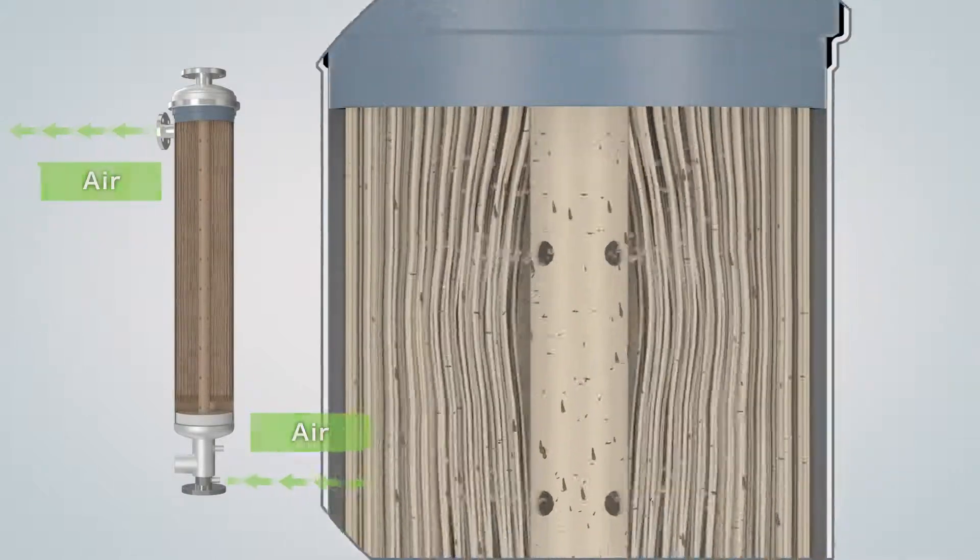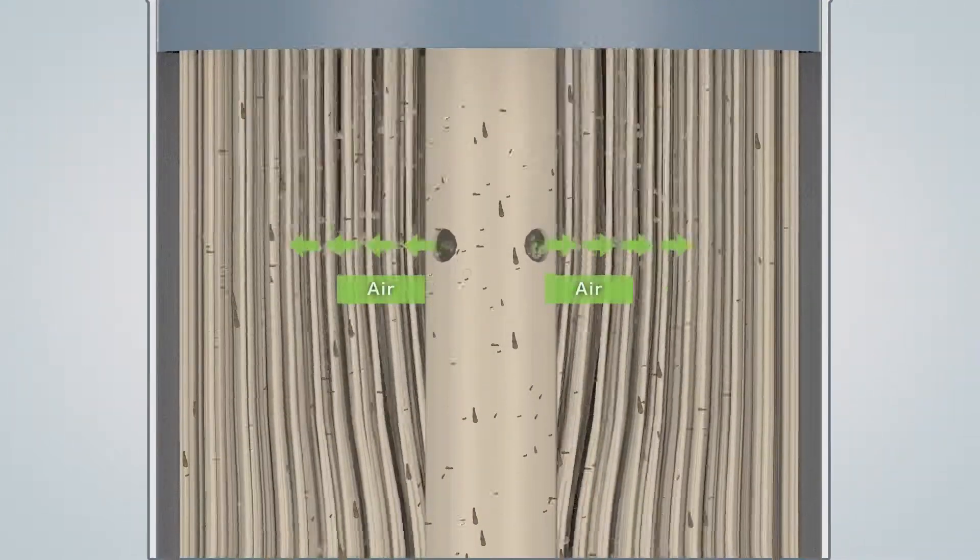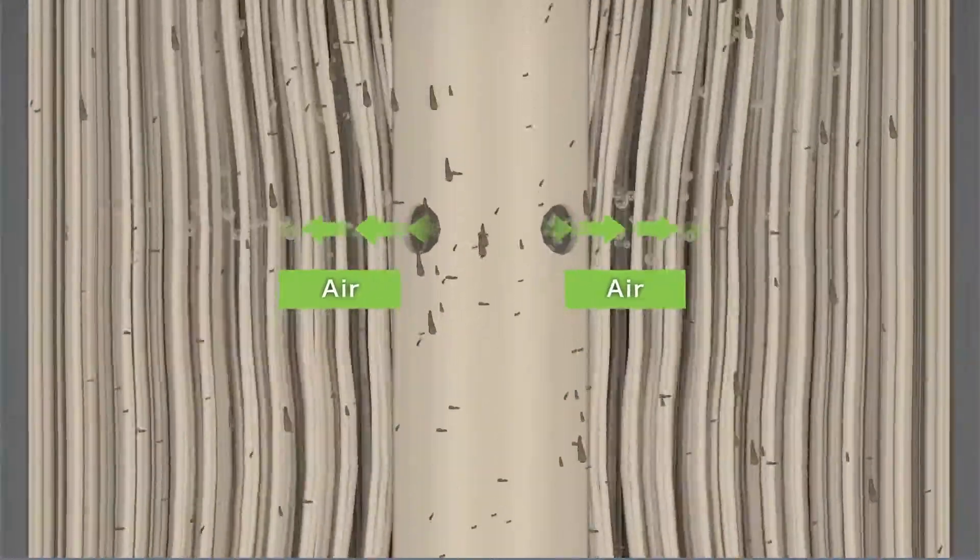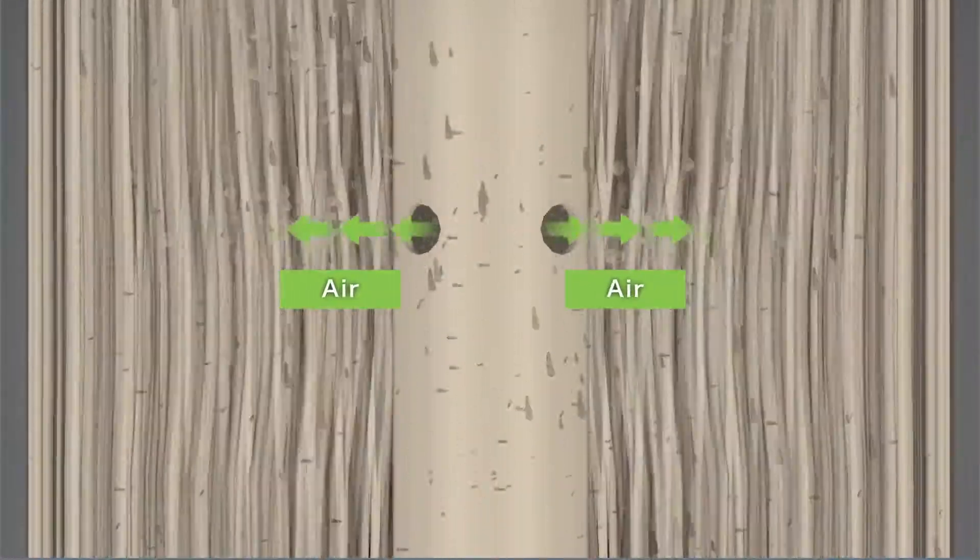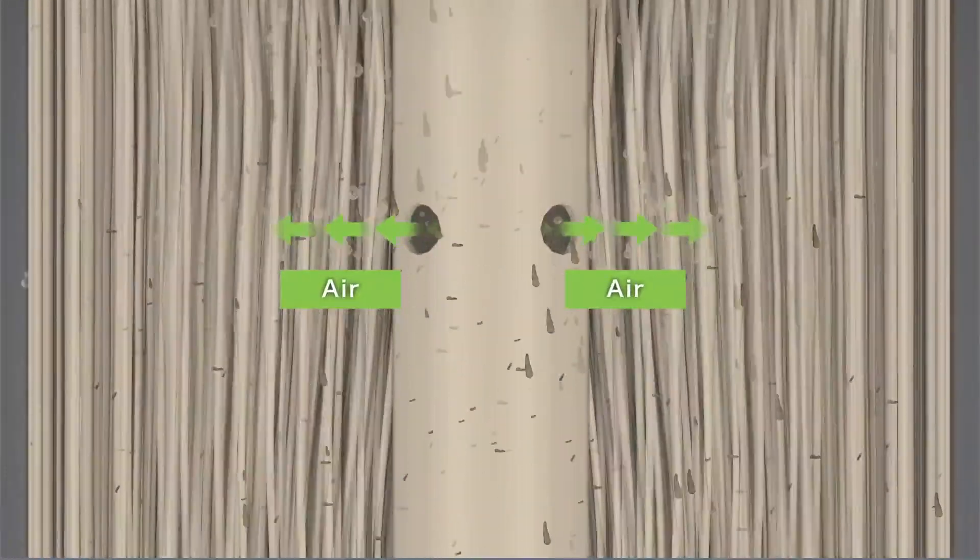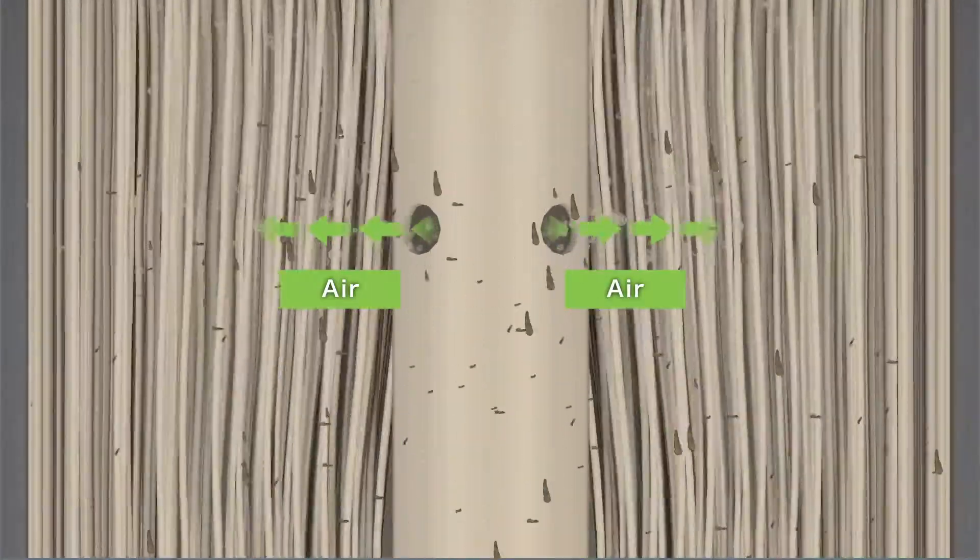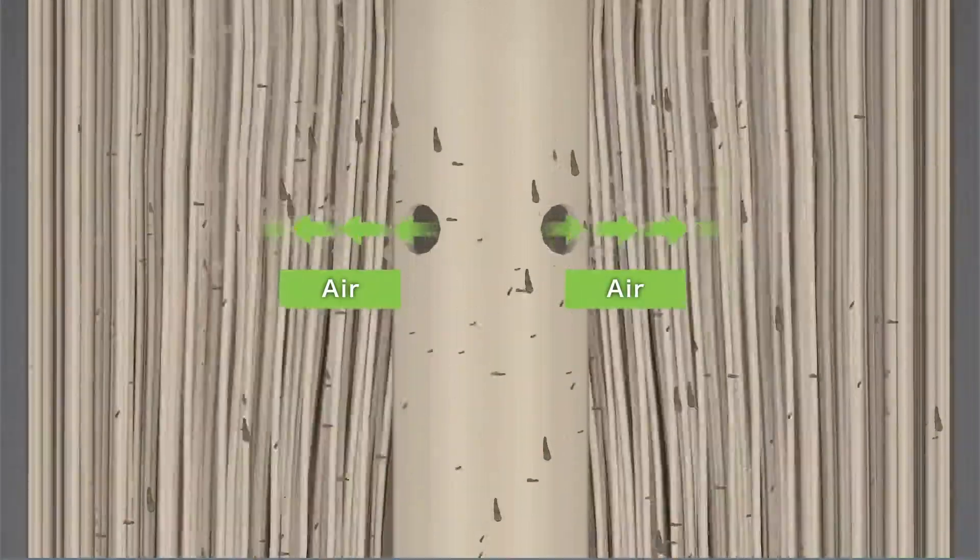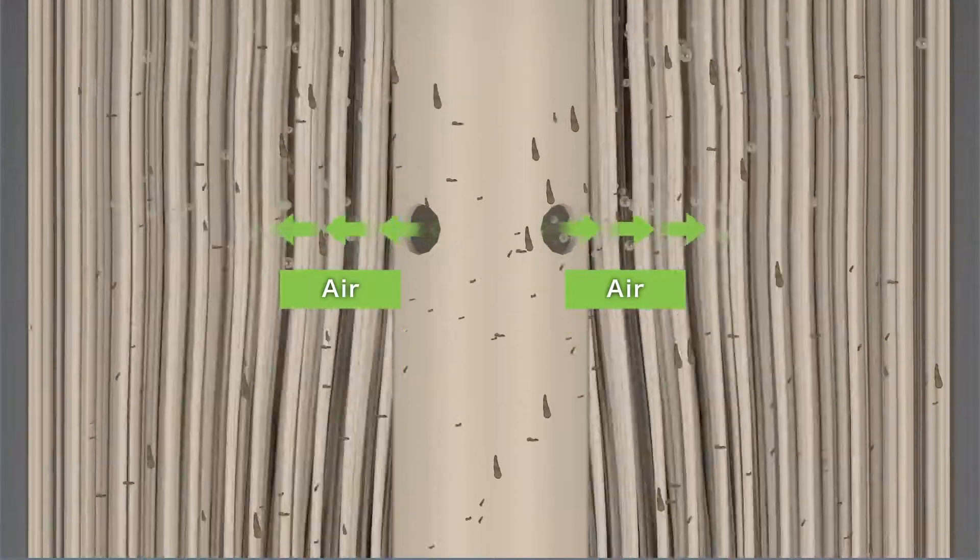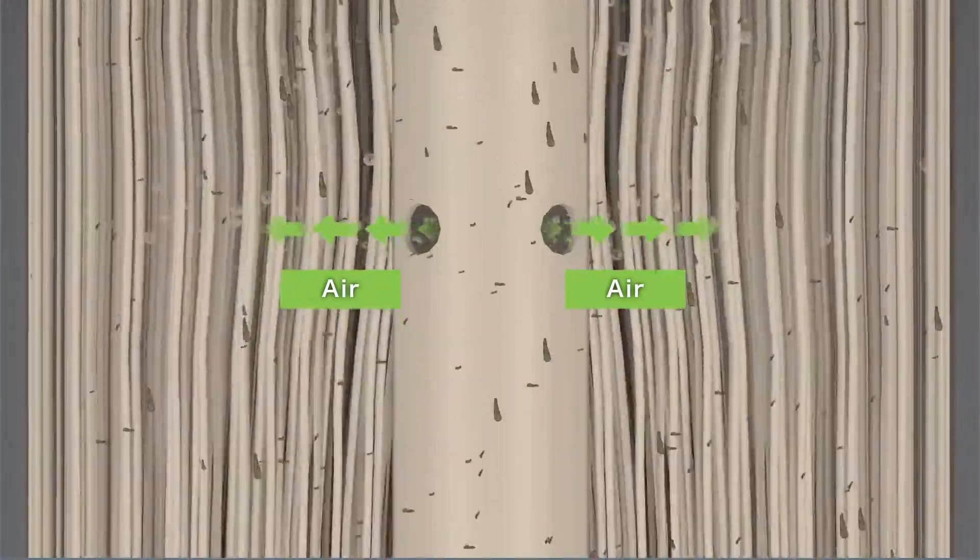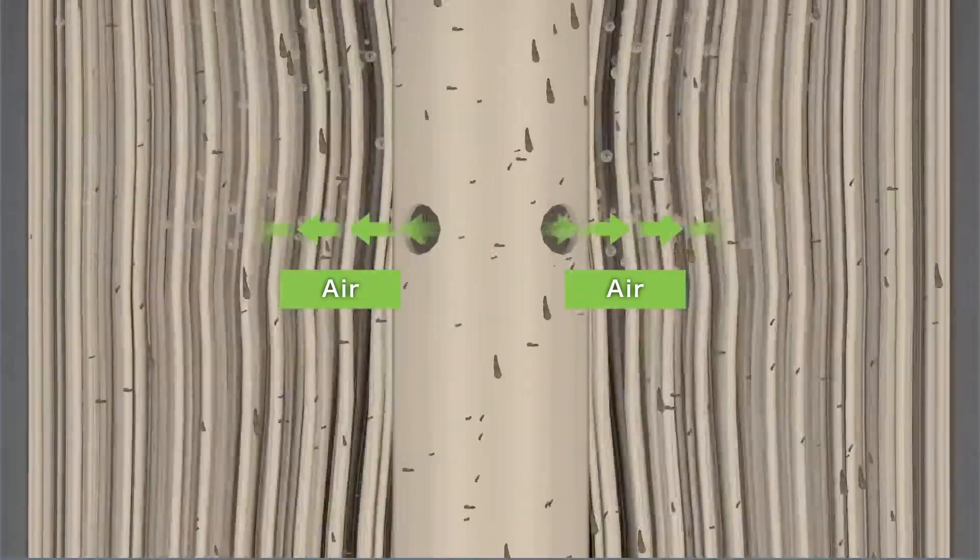By supplying air through the center distributor, bubbling cleaning of the upper part of the module, which could not be cleaned by the bubbling from the bottom part, becomes possible. In this way, by using two bubbling systems, the upper and lower, cleaning of the entire module becomes possible.